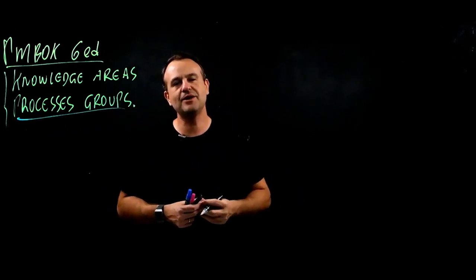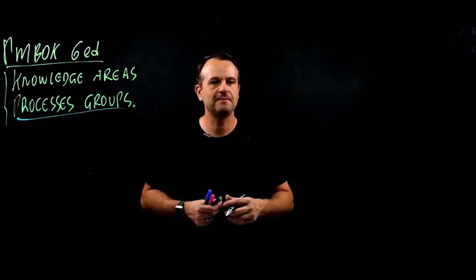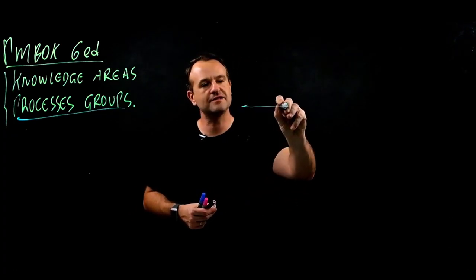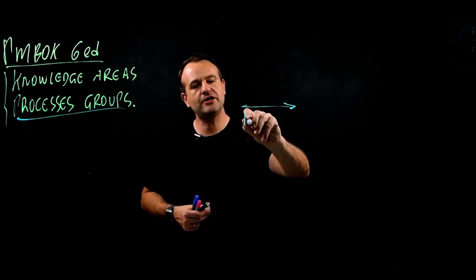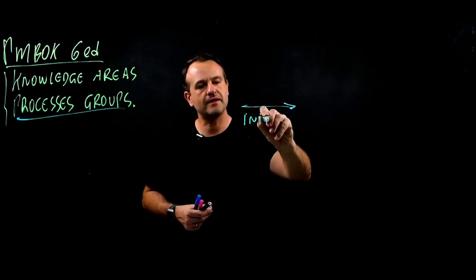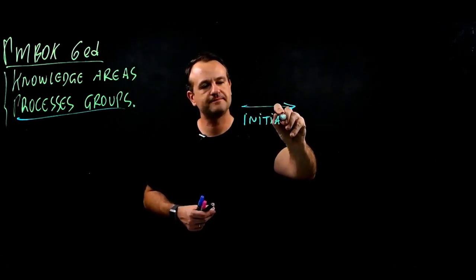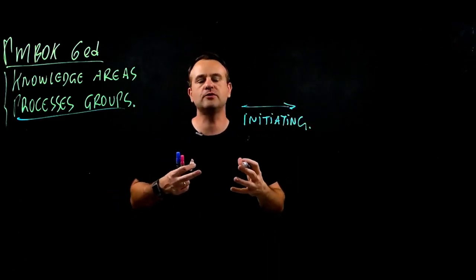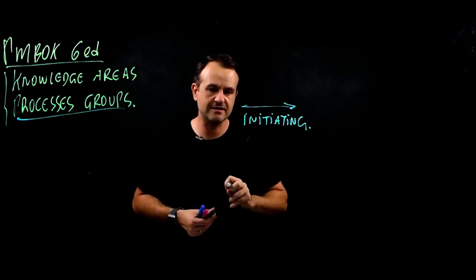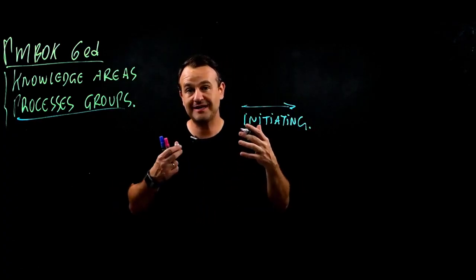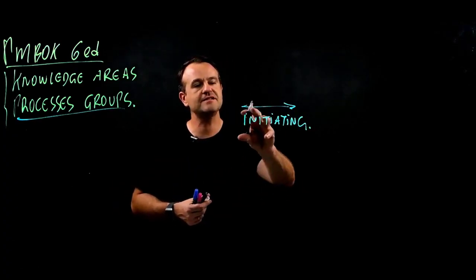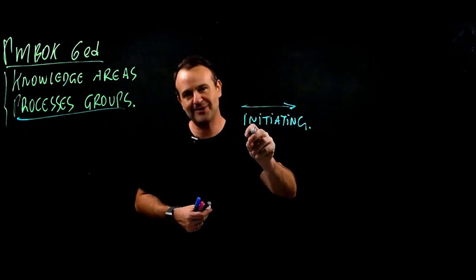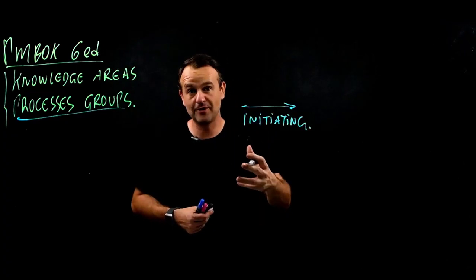One of the things we know about the process groups is that we have five process groups in the PMBOK Guide, and this is part of the standards. We have the Initiating process group — initiating a project. What happens here? We have the formal authorization of a project or a phase. You have the project charter, you identify the stakeholders, and this is the beginning of a project. A project should always start with a formal beginning.